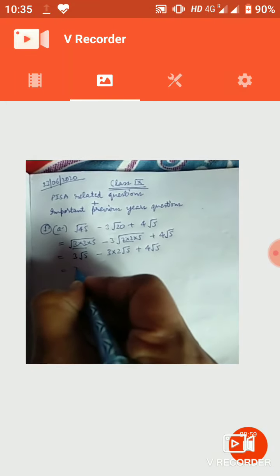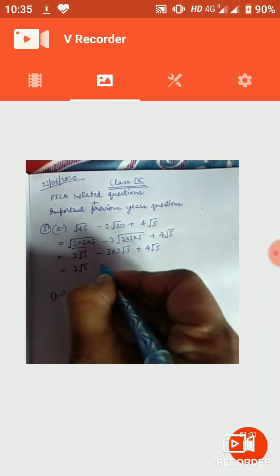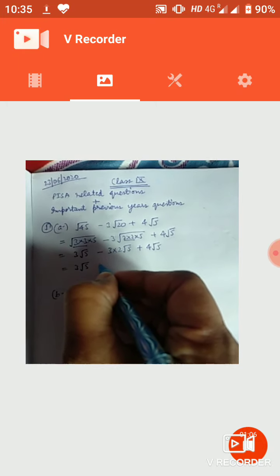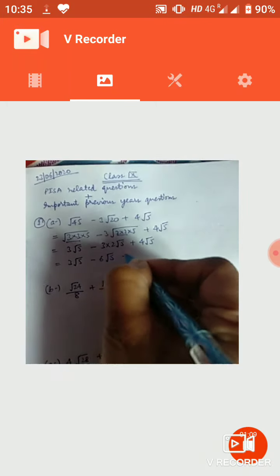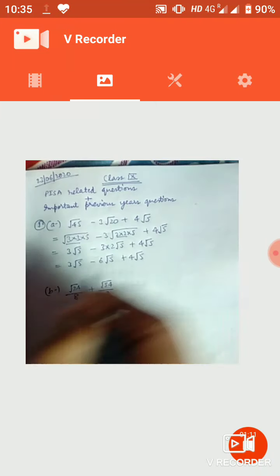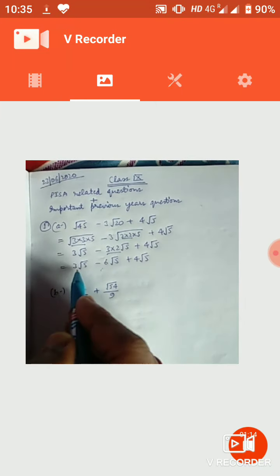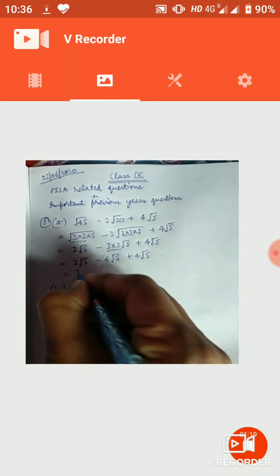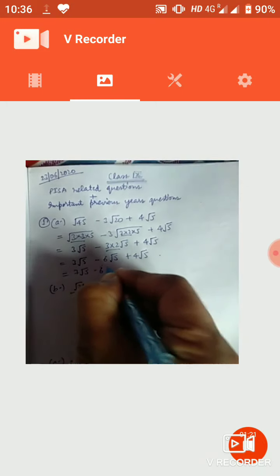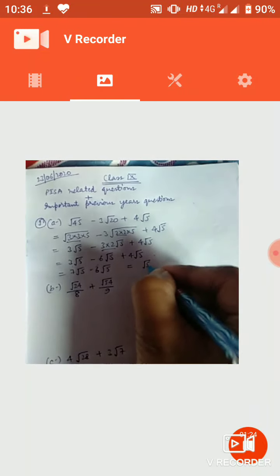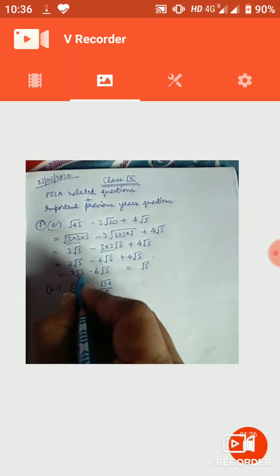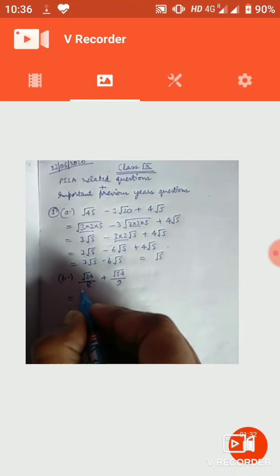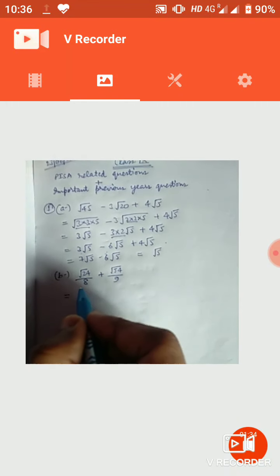तो 3 × 2 = 6√5, और 6 + ... देखिए: 3√5 minus 6√5 plus 4√5. तो 3 plus 4 = 7√5, और 7√5 में से 6√5 घटा दो तो आपका answer आ जाएगा √5. 7√5 में से 6√5 घटाया तो 1√5 बचा — answer है √5.